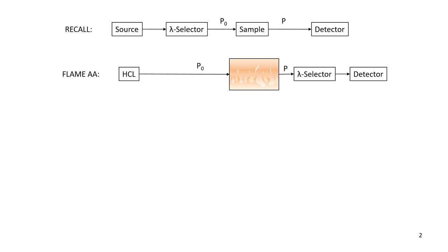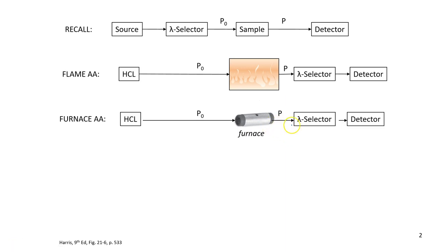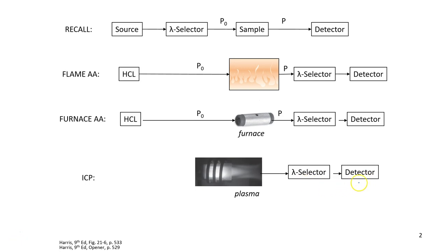The furnace AA is also very similar. It also uses a hollow cathode lamp. The sample is found inside of this small furnace. It's only about an inch long. And absorbance is measured. You still have these components. And then finally, in ICP, there is a plasma. Notice that something's missing here. We don't have a light source because the plasma is a little bit different. But you still have the wavelength selector and a detector.